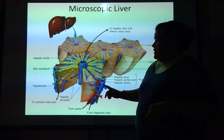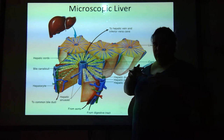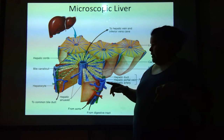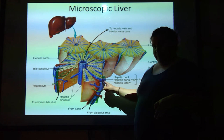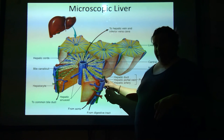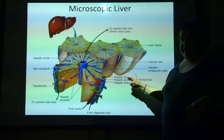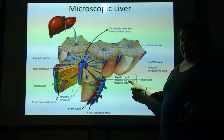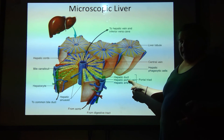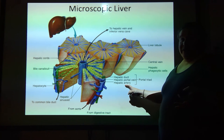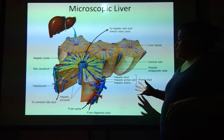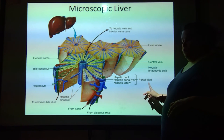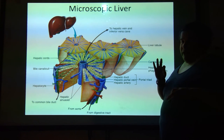Notice that at the corner of every single part of this hexagon, there are these three things: a red, a blue, and a green. The green is the hepatic duct — it's carrying bile. The blue is the hepatic portal vein — this is what's bringing that nutrient-rich, oxygen-poor blood into the liver for processing. And then the hepatic artery is carrying the oxygen-rich blood to feed the cells. This right here is called the portal triad because it's a three — a triad.